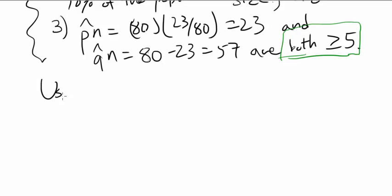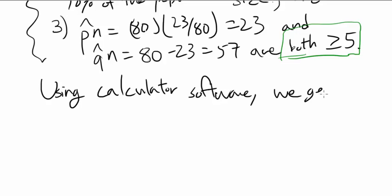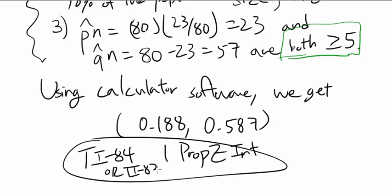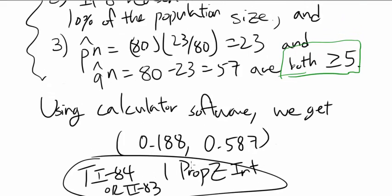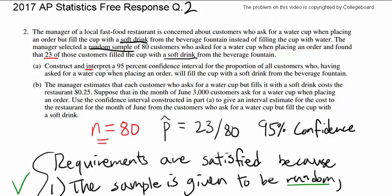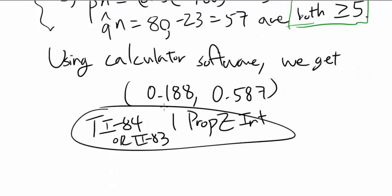We can use our calculator and we get 0.188 to 0.587. On TI-84, you can use one prop z-interval, one proportion confidence interval. If you are using TI-84 or TI-83, you can use this. So that's the 95% confidence interval, but what else do they want you to do? They also want you to interpret the confidence interval, which is important.